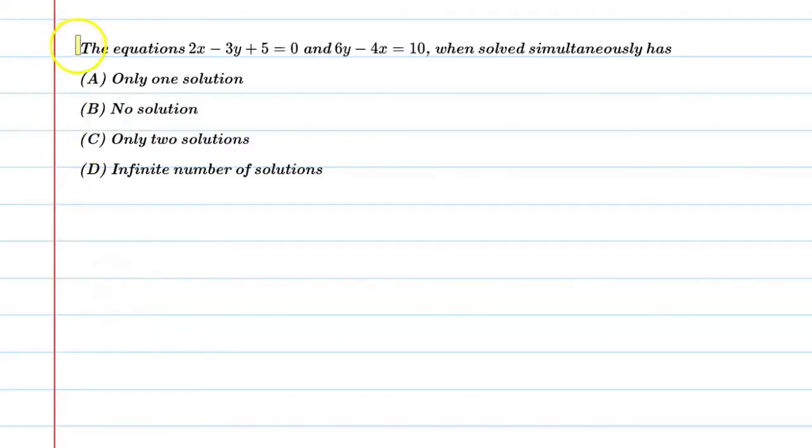Hello students, let's solve this question. The equation 2x minus 3y plus 5 equal to 0 and 6y minus 4x equal to 10, when solved simultaneously has...